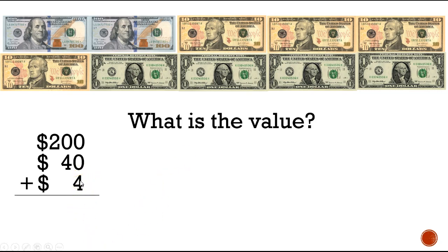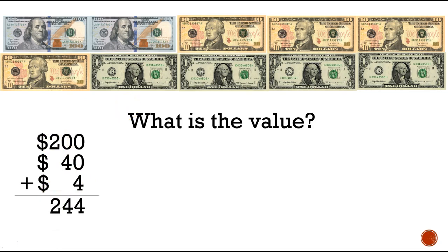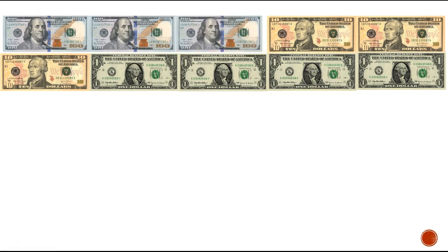Now we need to add all of those together. In the ones column there's a zero and zero — nothing to add, but we have a four, so we put four. For the tens column there's a zero and a four — no other tens, so bring down the four. For the hundreds column there's only a two, so bring down the two. The value of the money is two hundred and forty-four dollars.